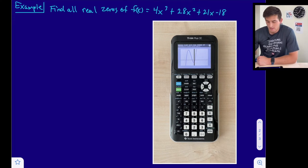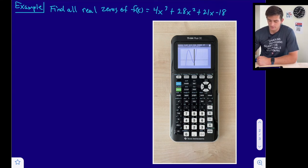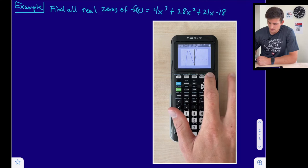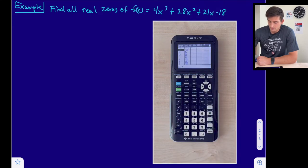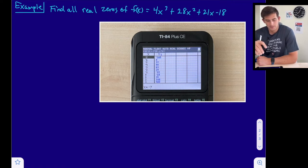I've already got my window set to see this function — the minimum and maximum of at least the middle portion. I'm not necessarily worried about what the graph looks like right now because I'm going to the table of values. On your calculator, hit second graph to get to your table of values. We're going to think about what the location principle said: we are looking for where y values change sign, or where a y value is zero.